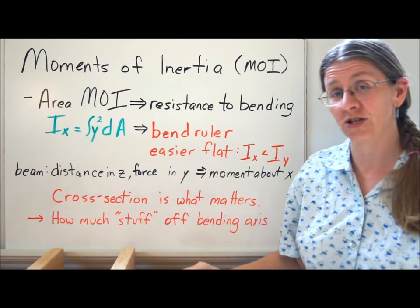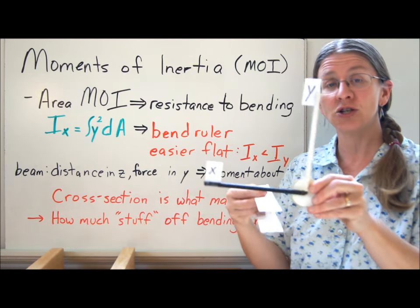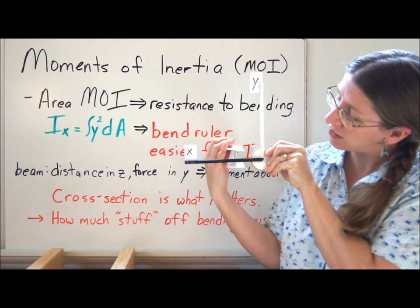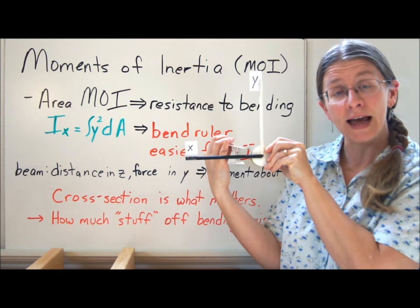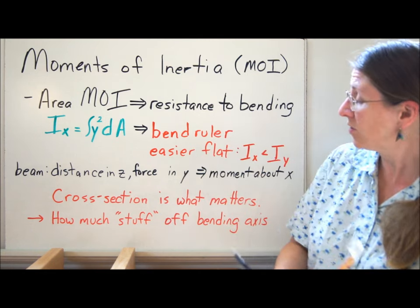It's the cross section that matters. And specifically, as I look at my cross sectional dimensions, x and y, what I want to know is how much of the material is how far off of the axis, the axis of bending x. So that's sort of where we're at.